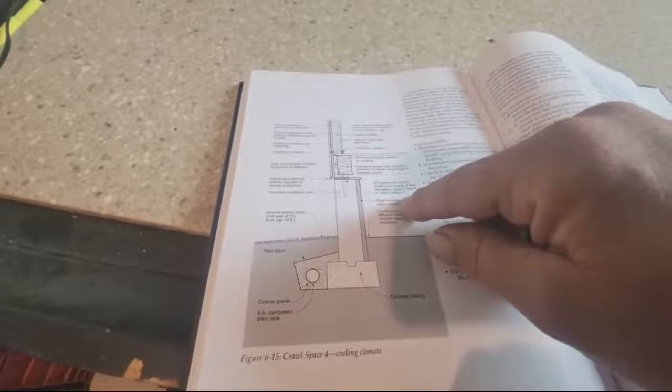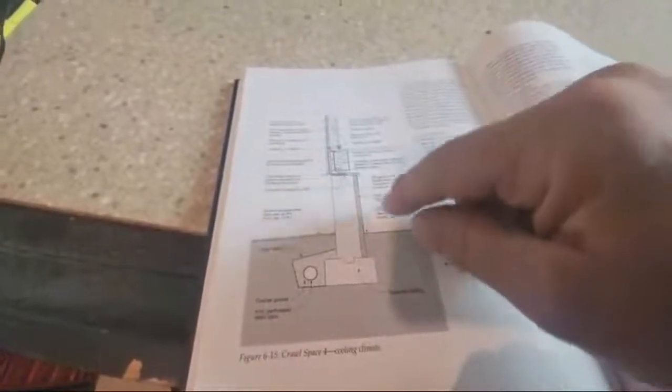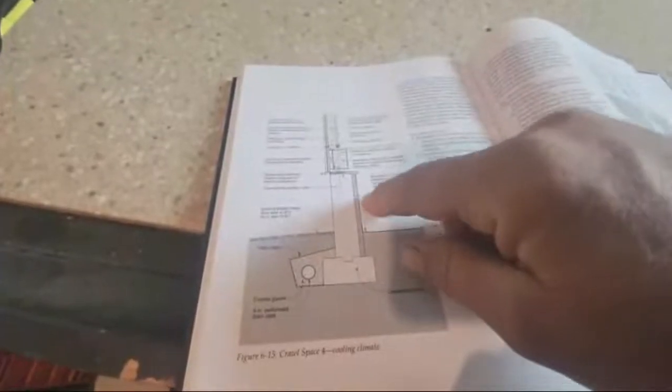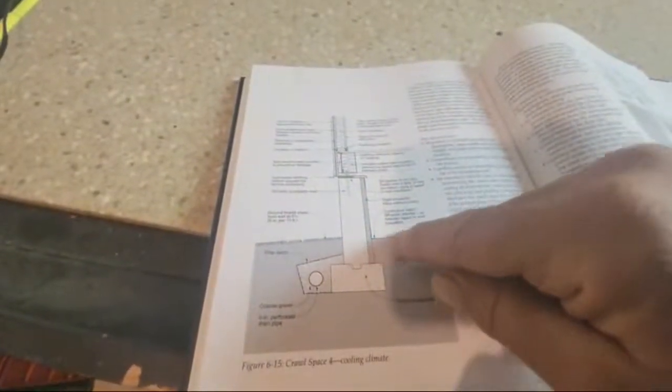It's better they do sell crawl space dehumidifiers. They're rather expensive, 800 bucks, you could spend six to a thousand. If it's a large enough space, you put it down in here, and you got to worry about the discharge. Run a hose, you might have to run it to a sump pump or a small miniature pump to pump it to a higher elevation.